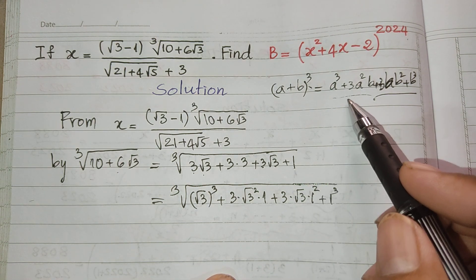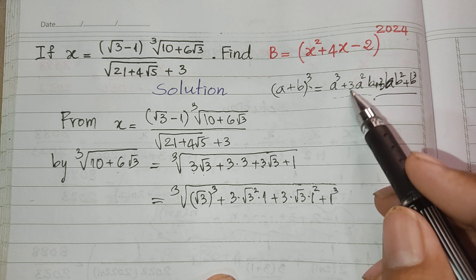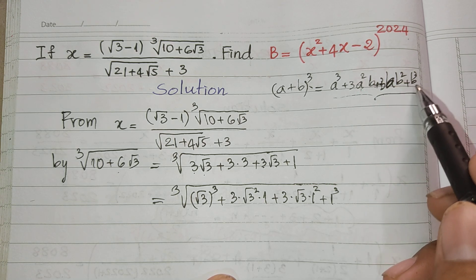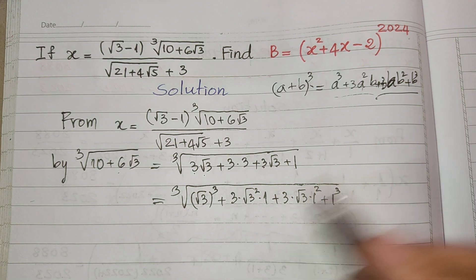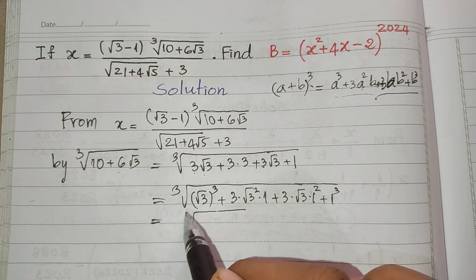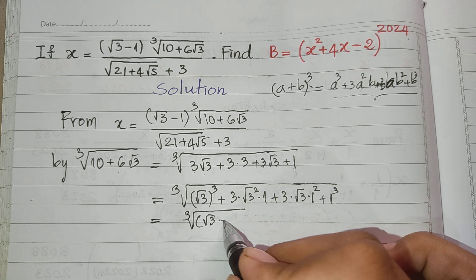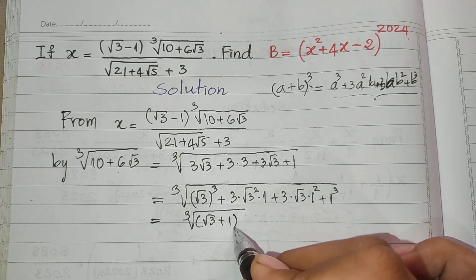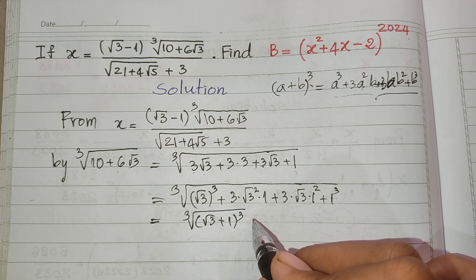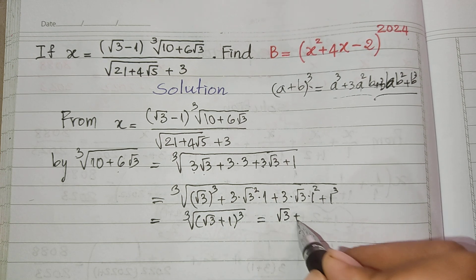This fits the formula a³ plus 3a²b plus 3ab² plus b³. So I can rewrite the cube root of (√3 plus 1) to the power 3. Simplifying the cube root, we get √3 plus 1.